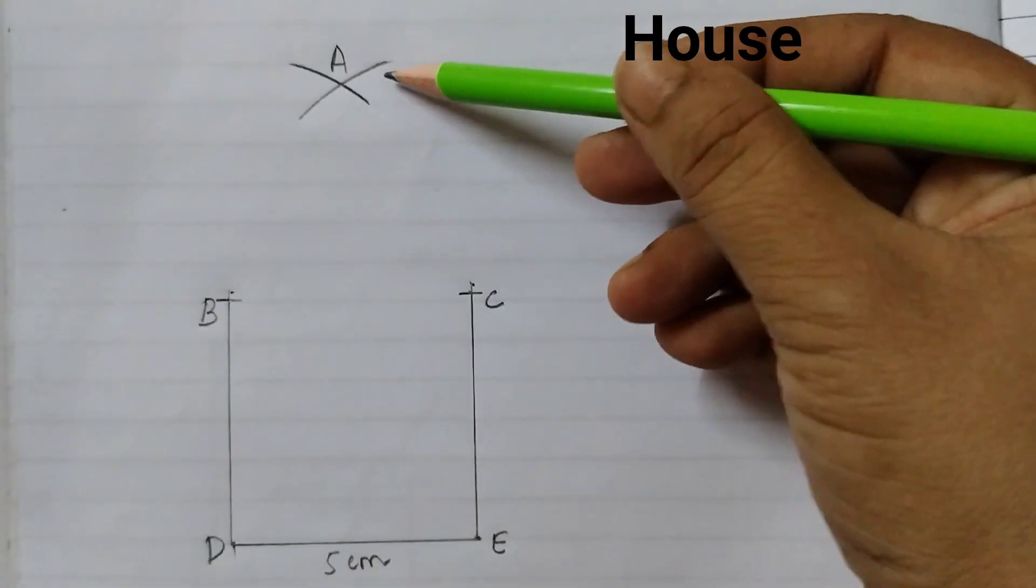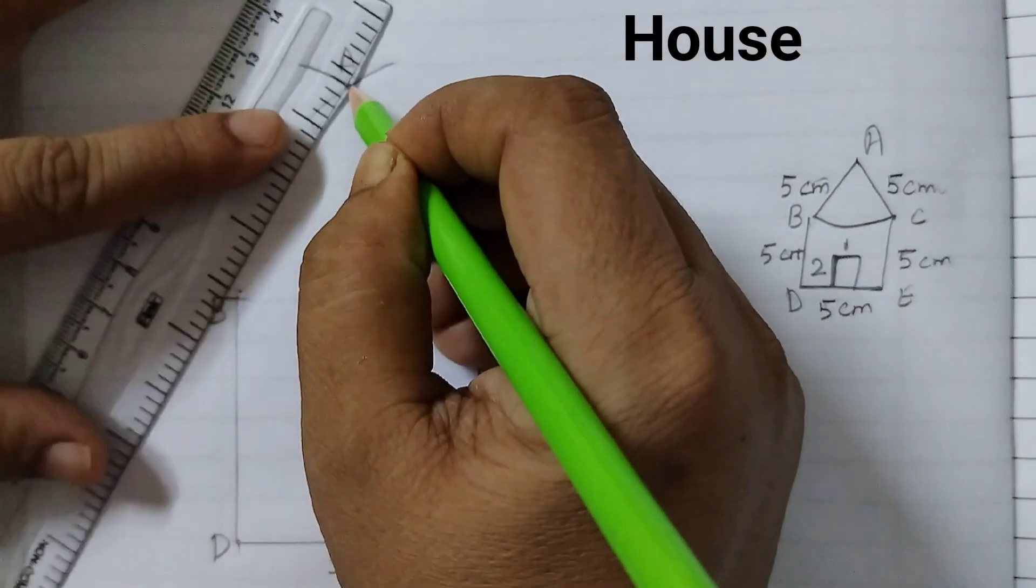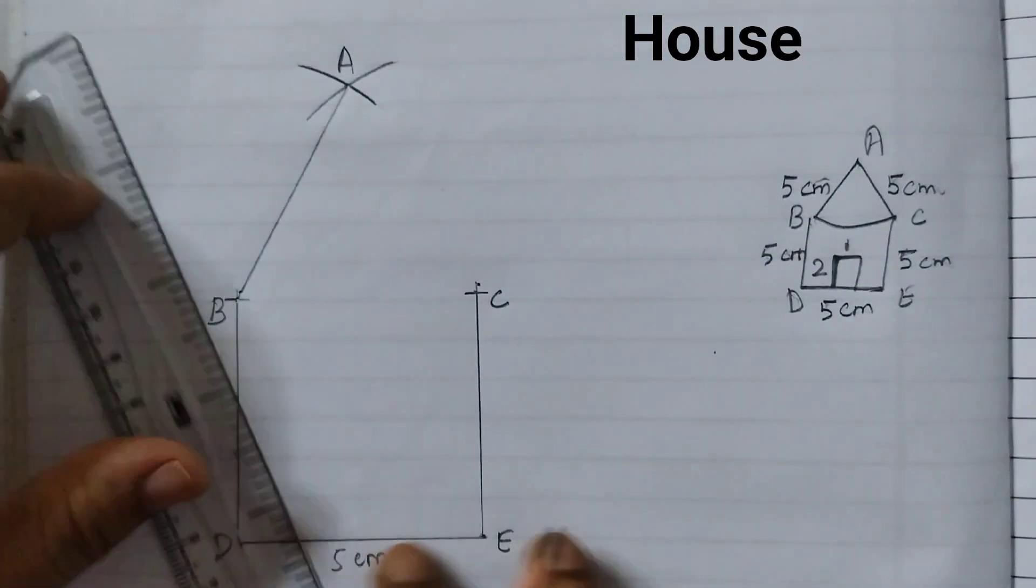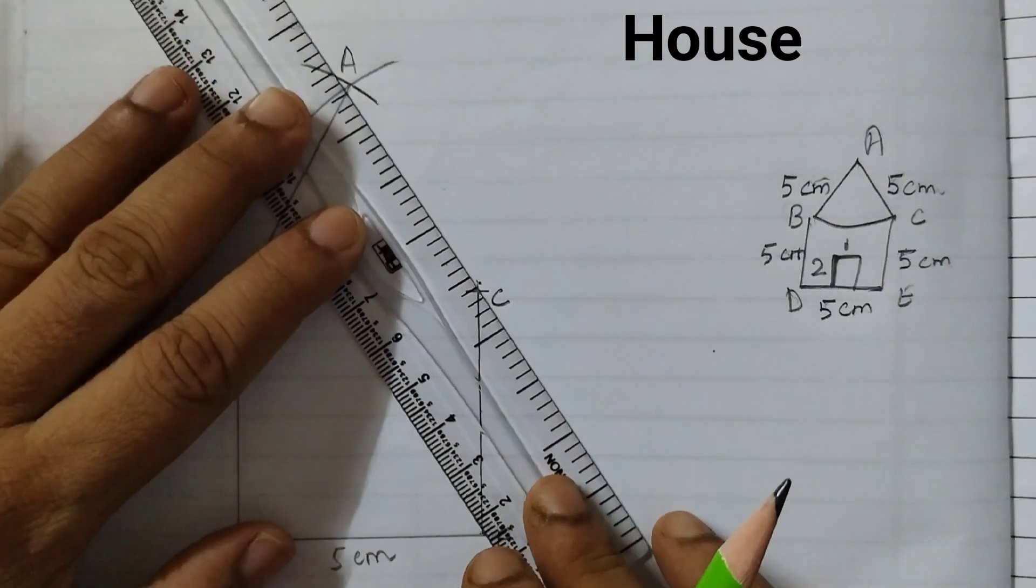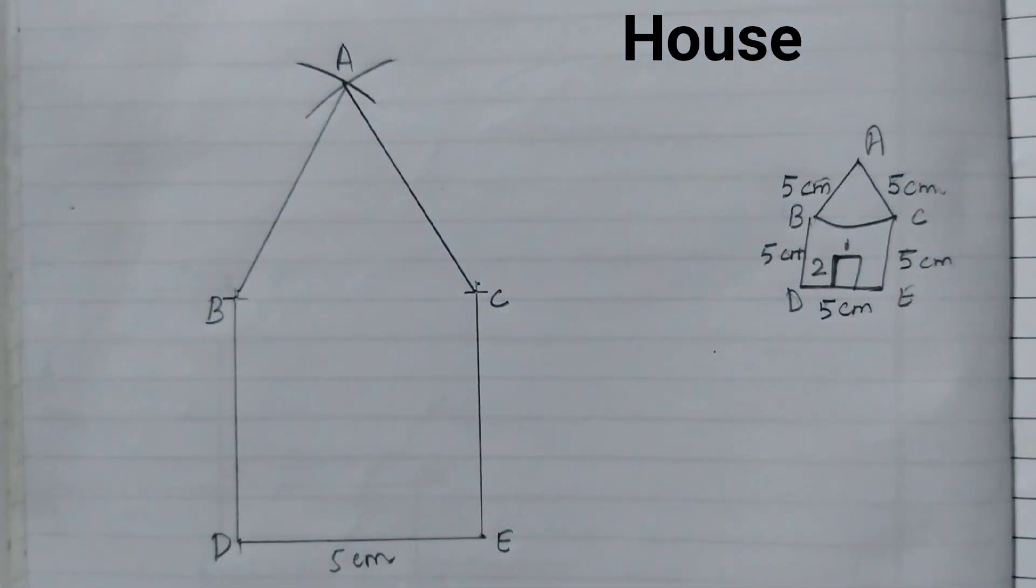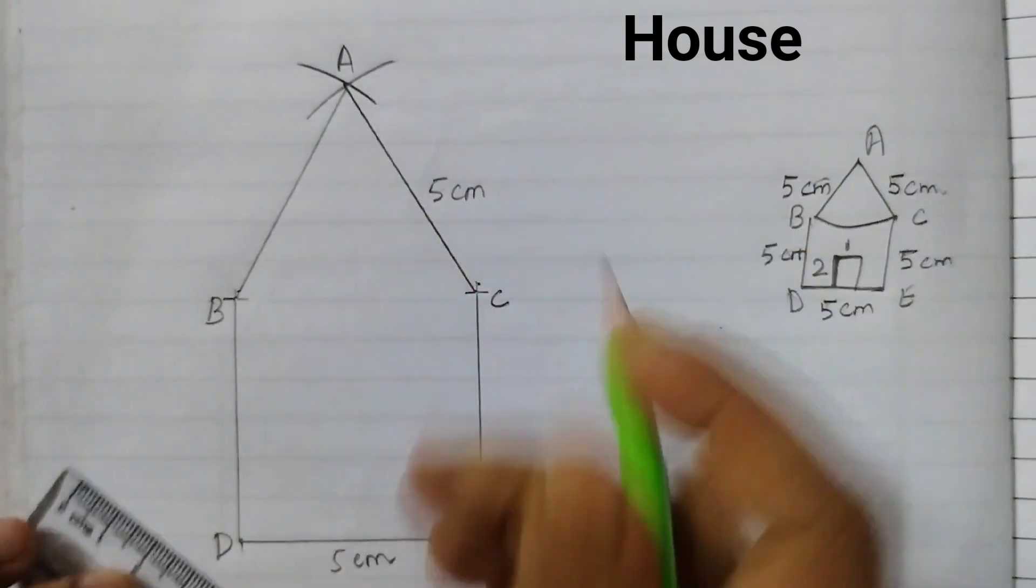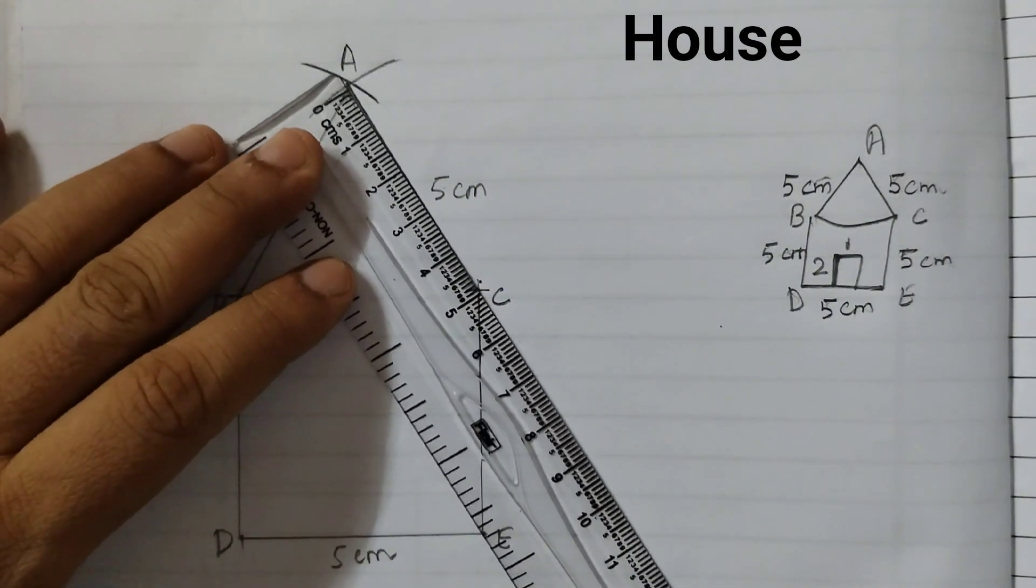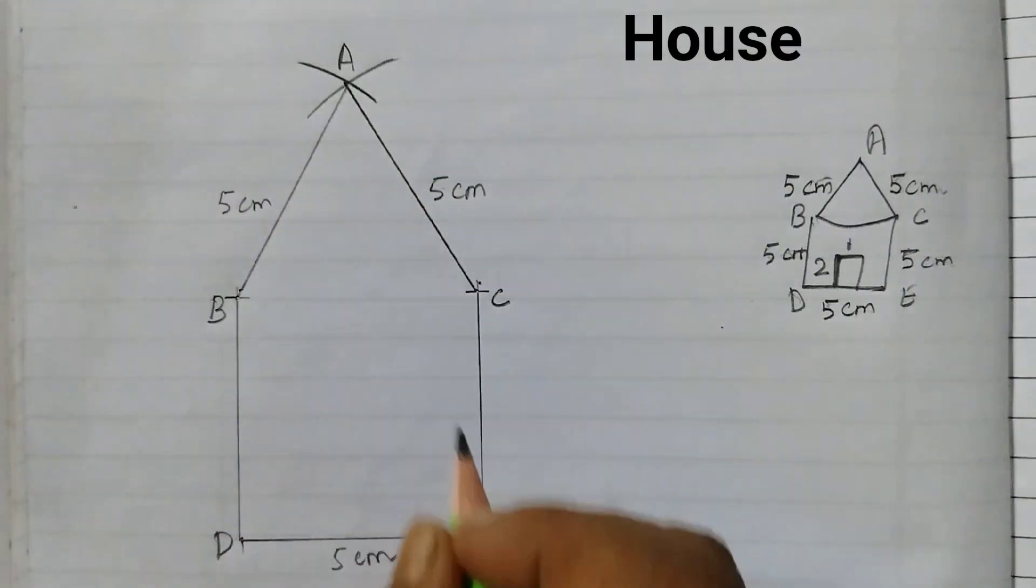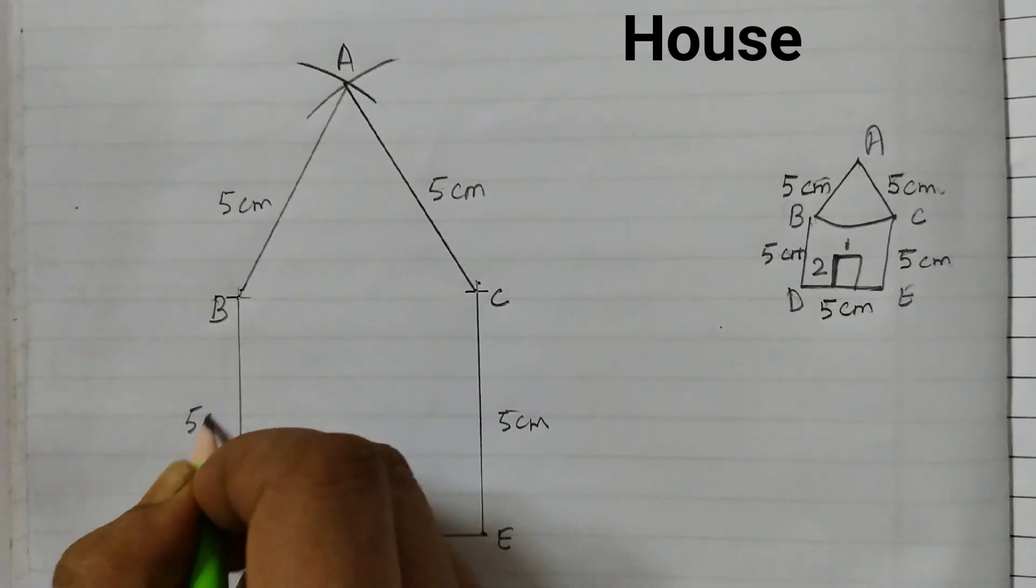Join A to B and A to C. This is 5 cm. We can check the measurement. 0, 5, 5 cm. Here also you write 5 cm. 5 cm.